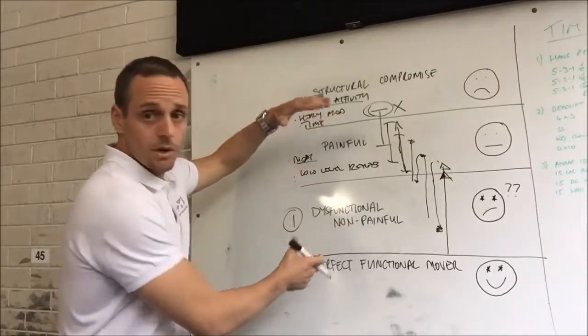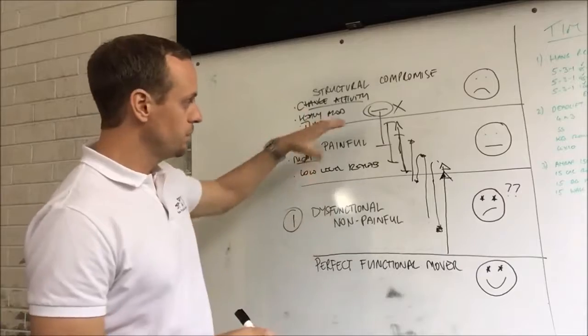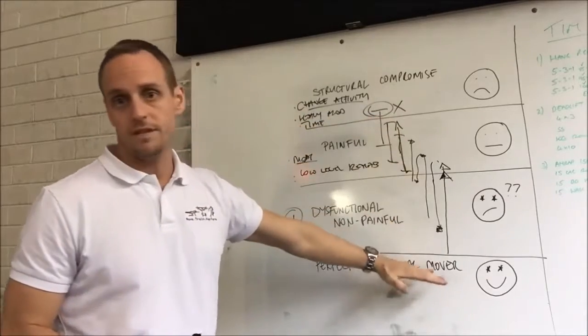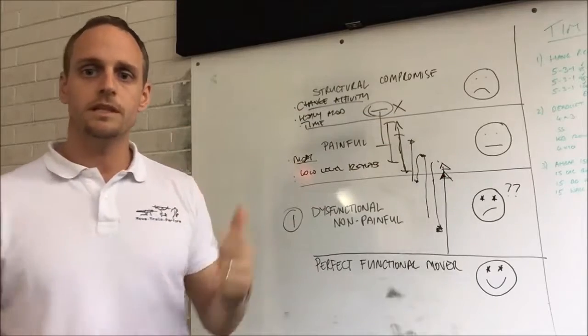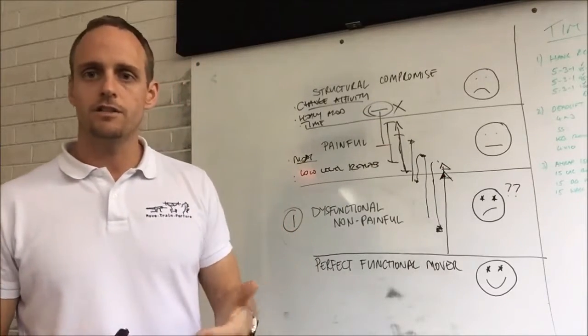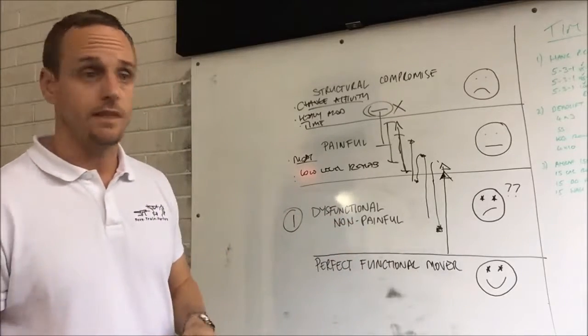In these areas here, we're in a functional deficiency area. If the problem is functional, it sits below this area. We can change that by improving your range of motion, improving your stability, improving your motor control, improving your movement patterns generally so that you can load faster, harder, heavier, longer—everything you need to do to be a better athlete.